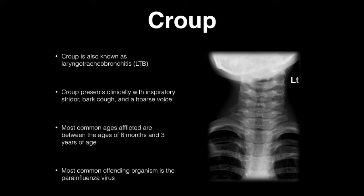The next topic is croup, which is very different from epiglottitis. Epiglottitis is a bacterial pathogen; croup is viral, also known as laryngotracheobronchitis. Croup presents with inspiratory stridor, a barky cough, and a hoarse voice — drooling is not seen. Most commonly affects children between six months and three years of age. The most common offending organism is parainfluenza virus, and it typically presents acutely.